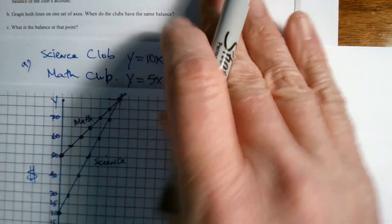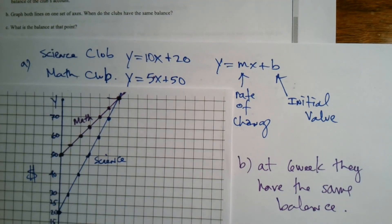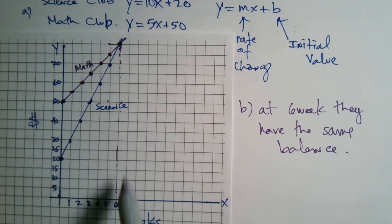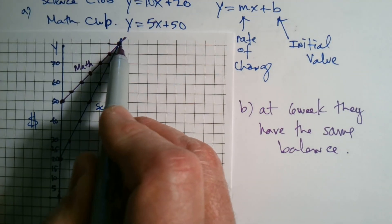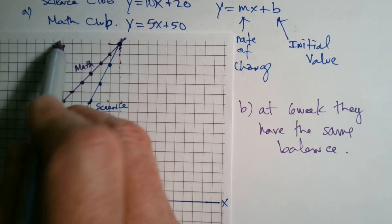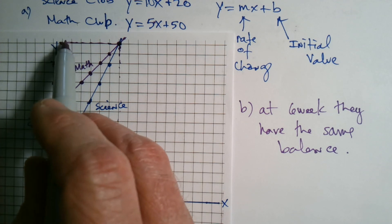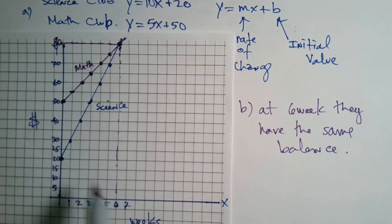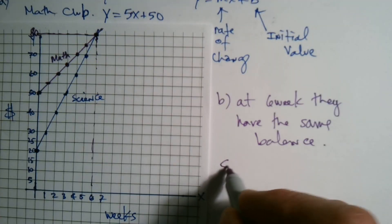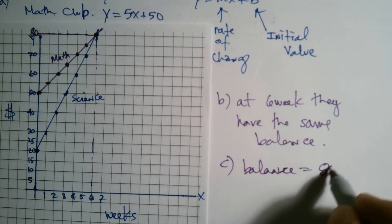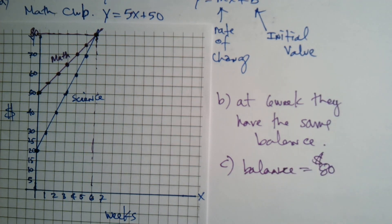And then part C: what is the balance at that point? You notice we went and we looked down here. It's at 6 weeks. But then to figure out what is the balance, we look at the Y. Where is it on the Y-axis? So if we follow over, that's 70, 75, 80. So it's up here at 80. So part C, then, the balance equals $80 at that 6 weeks. All right, I hope that helped.